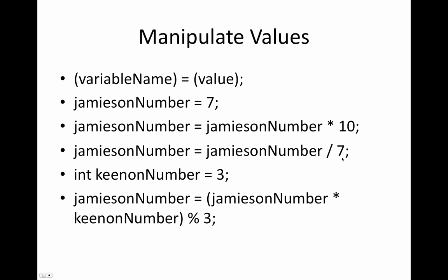Jameson number equals Jameson number divided by 7, so it goes to the Jameson number drawer, pulls out the number, which is 70, divides by 7, gets 10, puts it back in the Jameson number drawer.